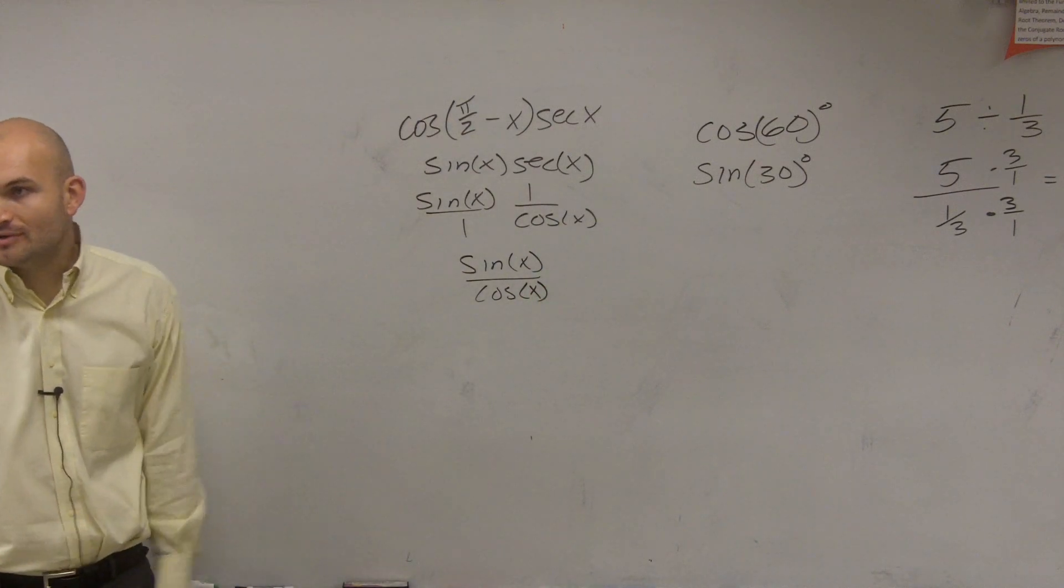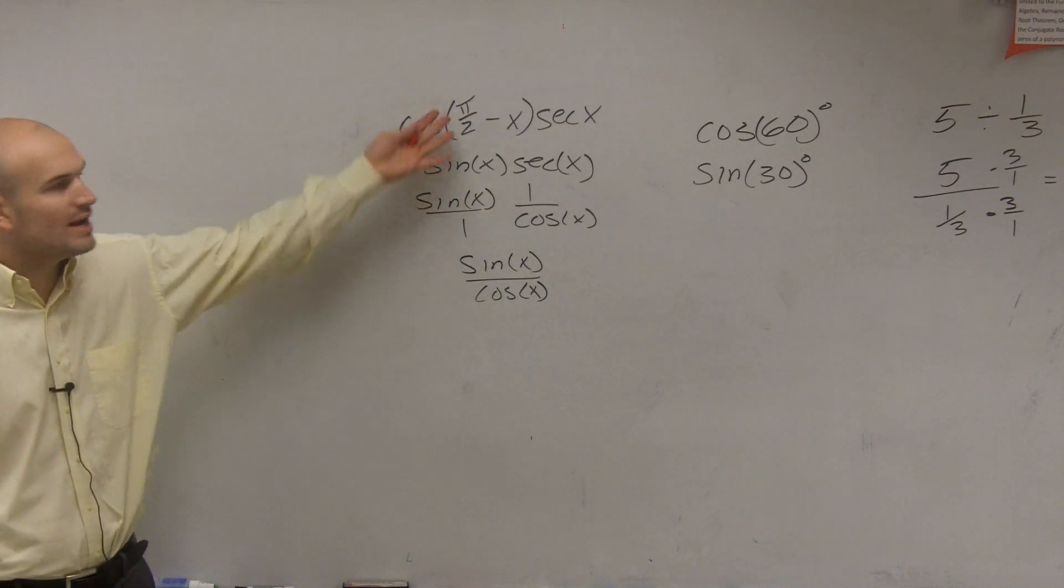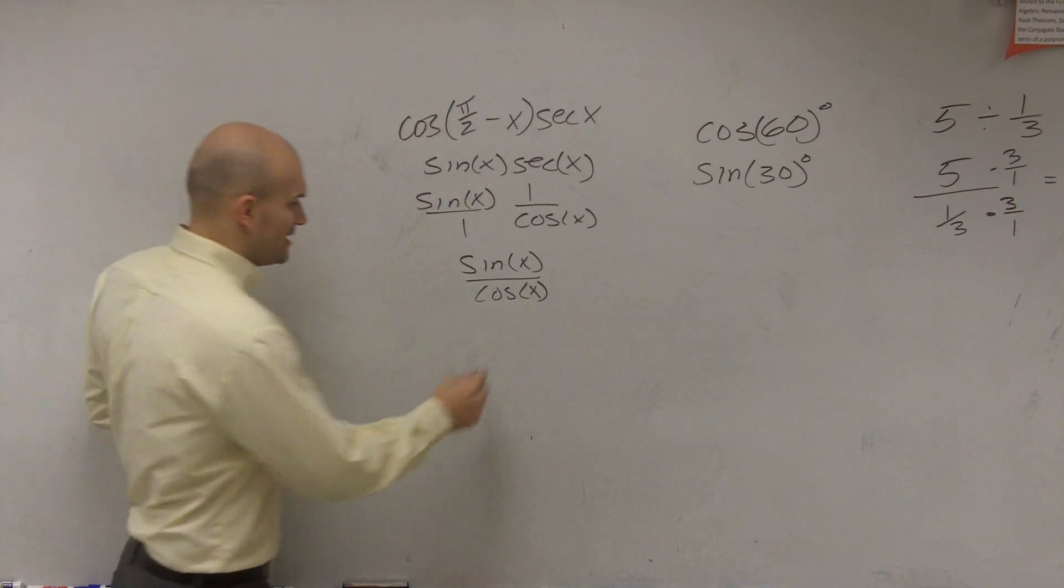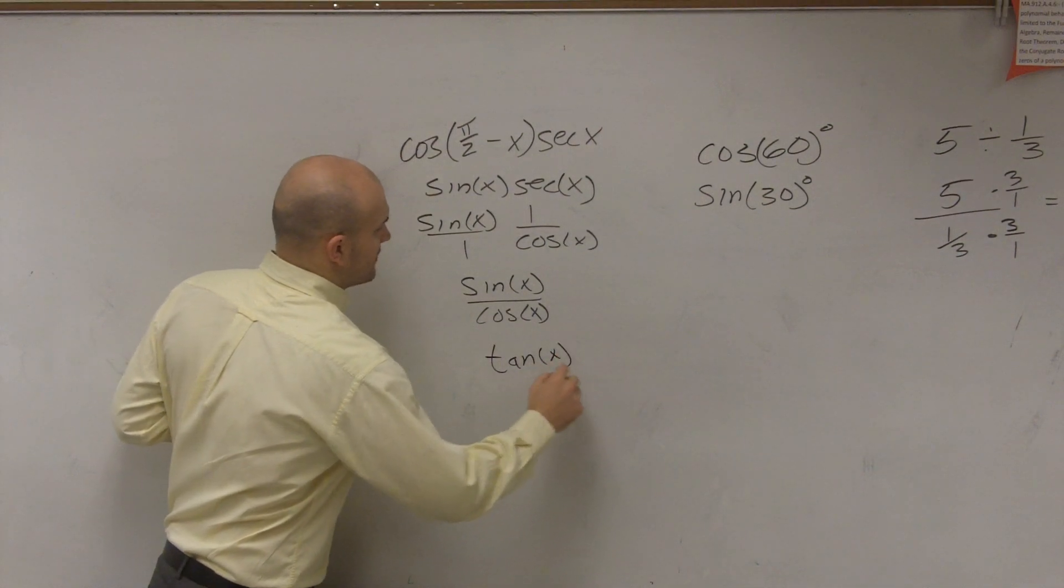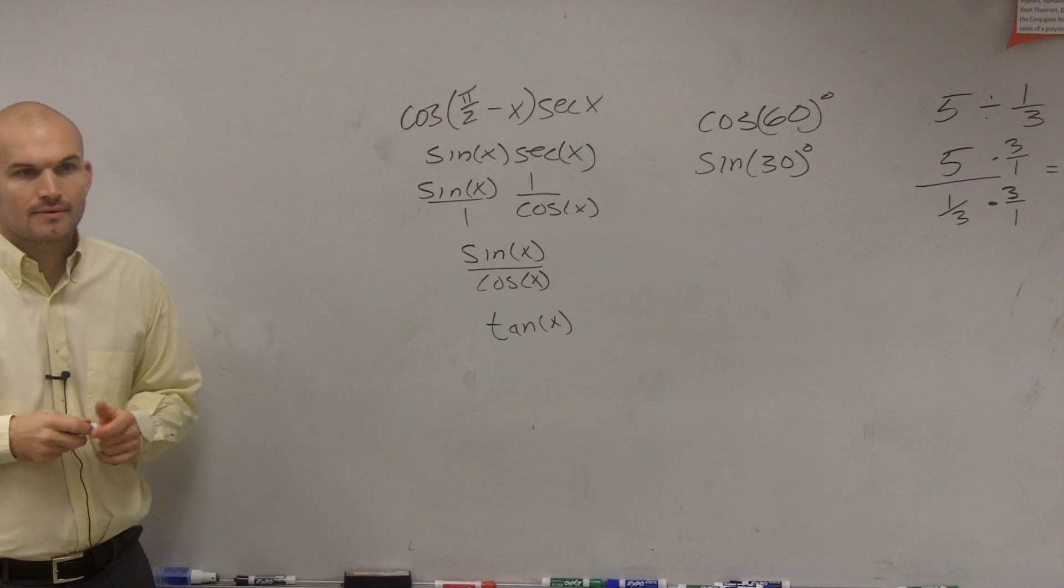Now, I have this little ratio, and is that a quotient that I can use? Yeah, it's a tangent, so I can write this as a single identity, which is just tangent of x. And that would be your final answer.